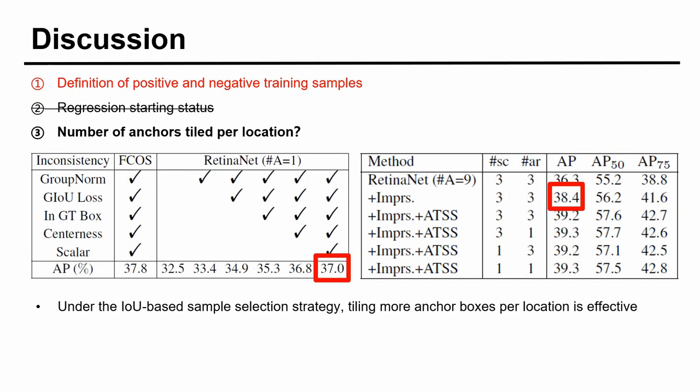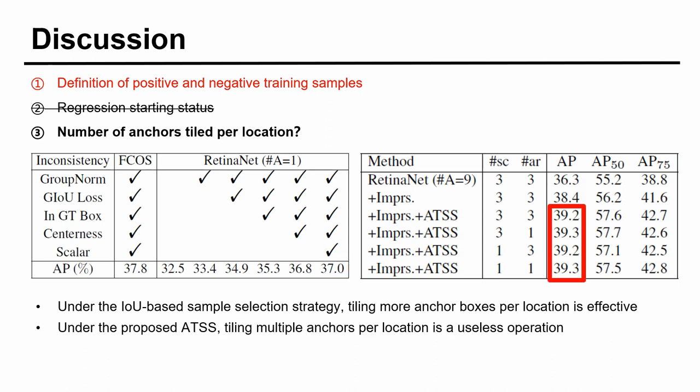Finally, we discuss the last difference. Tiling multiple anchors per location in RetinaNet improves the performance from 37 to 38.4, which means that more anchors per location is effective under the IOU-based sample selection strategy. However, it is a useless operation under our ATSS because different numbers of anchors per location has the same result.